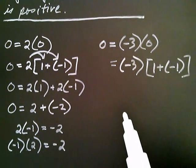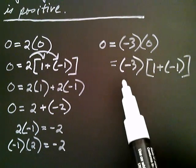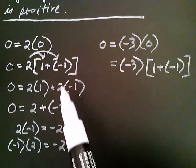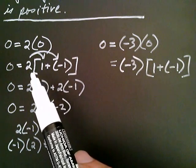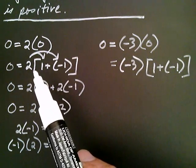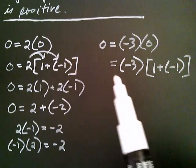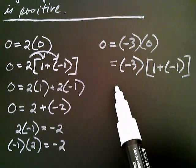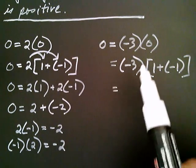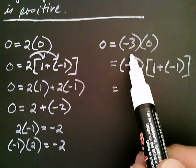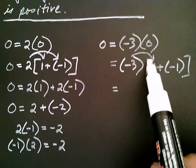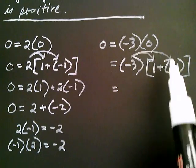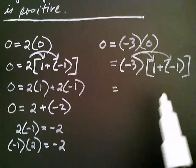Just like before, I can now distribute the negative three. So negative three gets multiplied by the one, and negative three is also multiplied by the negative one.